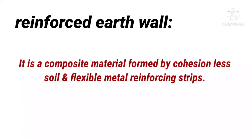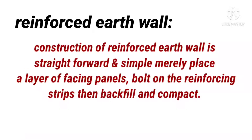The visible part of the structure is structurally the least significant. The facing skin can be in precast concrete with any one of a number of architectural finishes, semi-elliptical steel sections, treated timber, or even wide mesh. Construction of reinforced earth wall is straightforward and simple — place a layer of facing panels, bolt on the reinforcing strips, then backfill and compact.